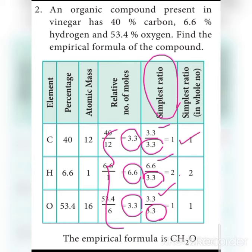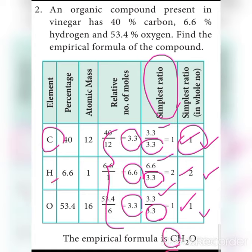The answers are in the ratio 1 to 2 to 1. Step 4: convert the simplest ratio to whole numbers. Since the values are already whole numbers, there is no problem. Carbon is 1, hydrogen is 2, and oxygen is 1.